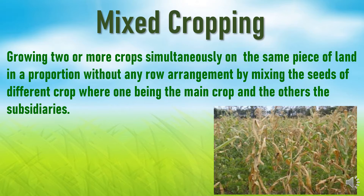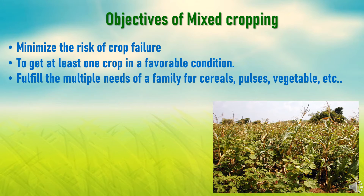Now, the objectives of mixed cropping. Mixed cropping is aimed to minimize the risk of crop failure. This technique is practiced to decrease the risk of total crop failure due to adverse or unfavorable climatic conditions like drought or less rainfall. The second objective is to get at least one crop in a favorable condition, since we are growing two or more crops. Even if adverse situations prevail, it may be favorable to at least one crop, assuring the farmer a minimum harvest and preventing food grain scarcity.